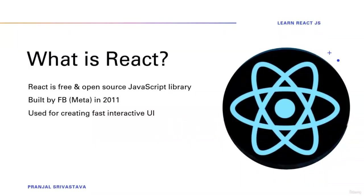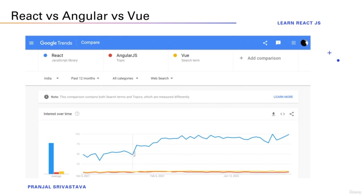So what exactly is React? React is a JavaScript library for building fast and interactive user interfaces. It was developed at Facebook — now known as Meta — in 2011, and currently it is the most popular JavaScript library for building user interfaces. As you can see in Google Trends, React is the dominating one over other JavaScript libraries like Angular and Vue.